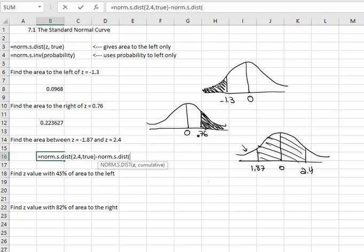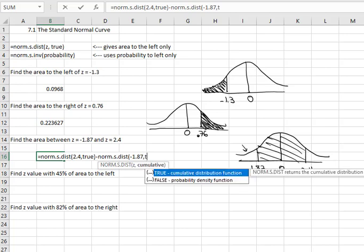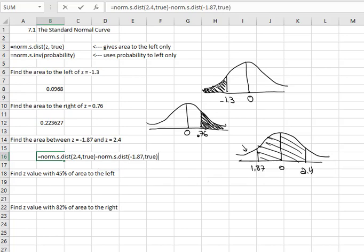And when I hit enter, it's going to give me the area between the negative 1.87 and the 2.4 is 0.9611 when I round.